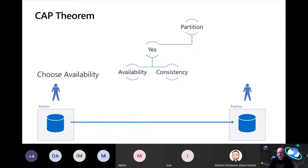Simply put, CAP theorem says that if the network goes down between two nodes, you have a choice between availability or consistency. In this system, I have a master database where I write data on the left and a read replica on the right, separated by some distance. Choosing availability: I write five in the master, replicate to the replica, and this works fine when the network is working. However, if I cut the network and write six into the master, I still read five in the replica — I'm making a conscious decision to optimize for availability, sacrificing consistency during a network partition.